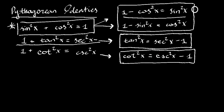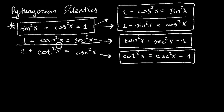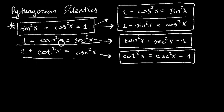1 minus cosine x squared equaling sine x squared — I got that from subtracting cosine x squared. I moved cosine x squared to this side and got 1 minus cosine x squared equals sine x squared. The same thing on this one, I just subtracted sine. And here, how I got tangent and cotangent is I divided each piece by sine — cos over sine, 1 over sine — and I got this. And this one I divided each piece by cosine, and I got sine over cosine, which is tangent, plus cos over cos is 1, giving 1 plus tangent equaling 1 over cos, which is secant.